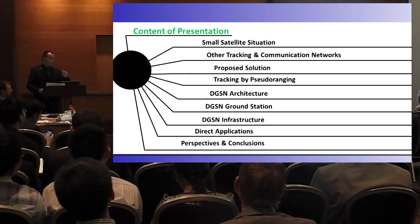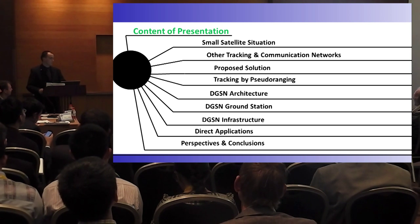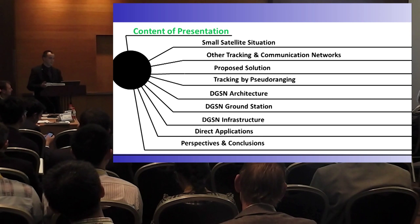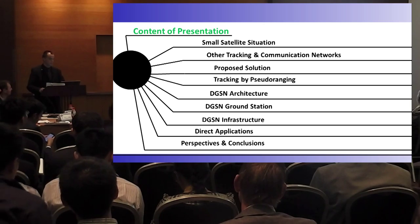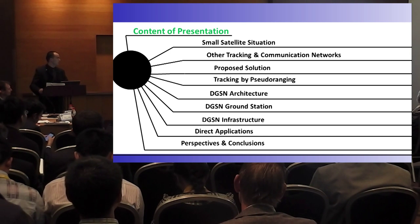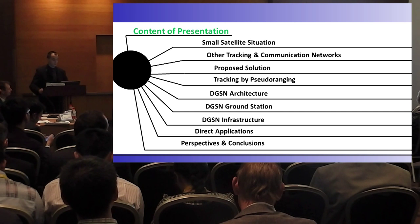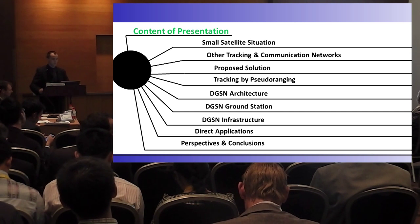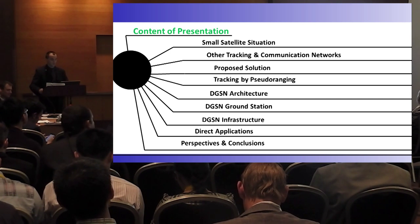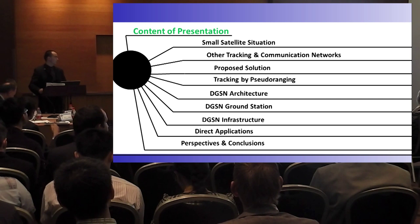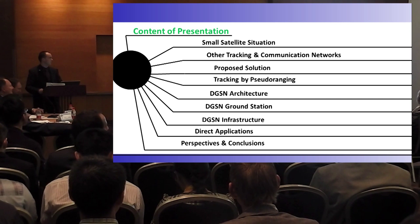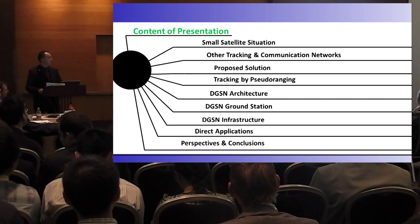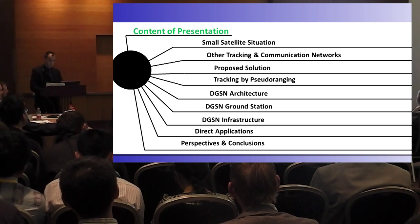We are one of the projects the ITU representative told us about, but we are not transmitting anything to outer space, so we are just listening — we are safe in this aspect. To give you context about the presentation, I will give an overview of why we did this, our small satellite project, how other tracking and communication networks work, our proposed solution, the studio engine we are currently applying, the architecture, ground station infrastructure, application examples, and perspectives and conclusions.